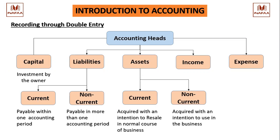Once we are able to identify the accounting head of the transaction, it means we have almost learned 60 to 70% of financial accounting. This is the basic of financial accounting, and it is very important to know how to record the transaction.